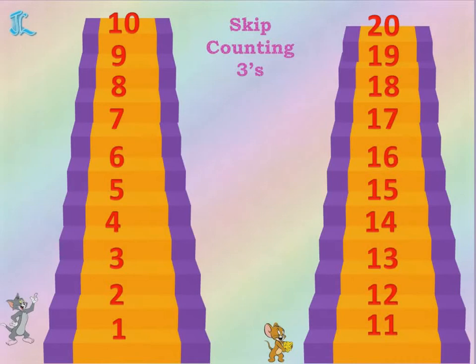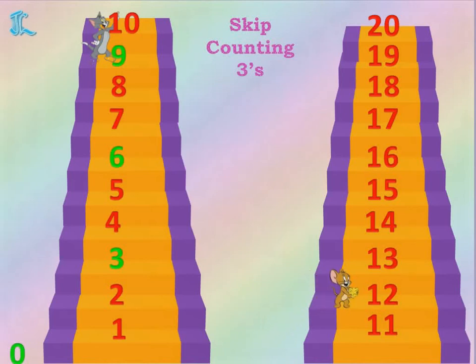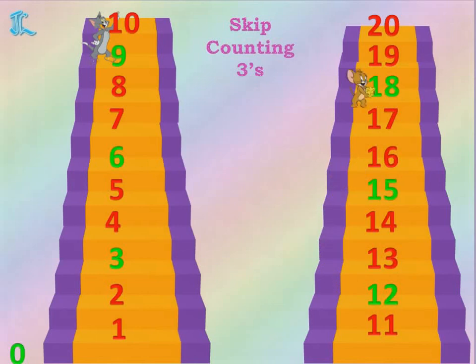Now let's do Skip Counting by Threes once again with the help of a ladder. From 1 to 10 Tom will continue, and from 11 to 20 Jerry will continue. Tom is on number 0 — it leaves two numbers and jumps to 3, then 6, then 9. Jerry continues to 12, then 15, then 18.